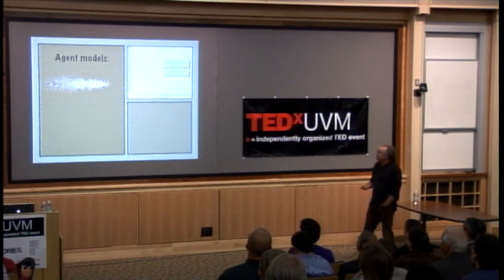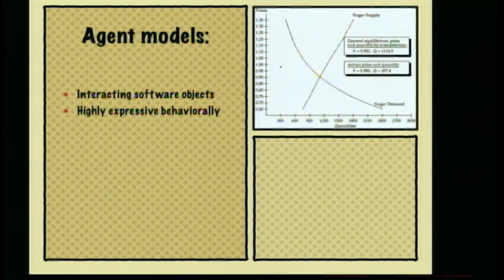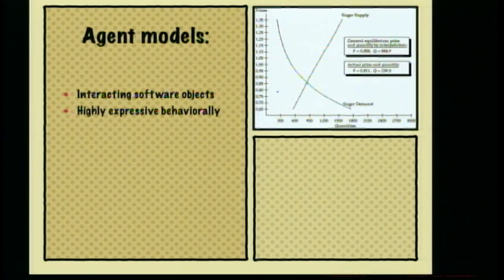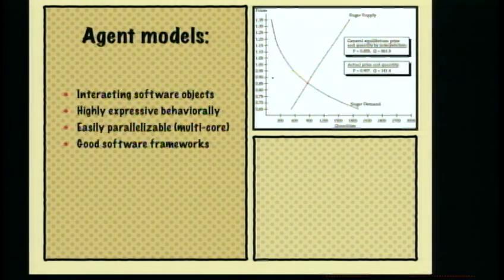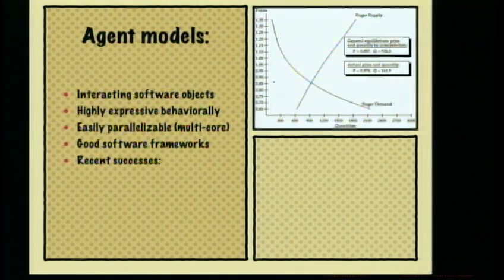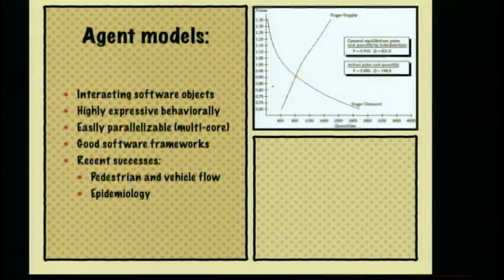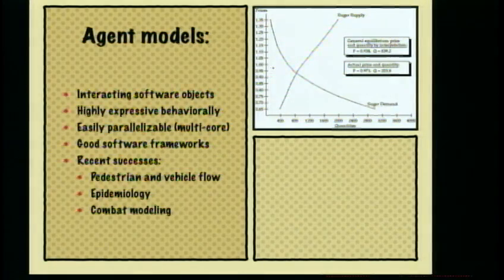One way to do that is with agent computing. For those who haven't seen it before: we have a bunch of software objects that interact in some non-trivial way. They're not just particles in a gas bouncing off one another. It's actually very easy to write down behaviorally and experimentally determined rules of behavior and put those into our models. These codes are easy to parallelize, which is important on modern architectures. There are good software frameworks for doing this today, and we've had several recent successes using agent-based models for policy purposes: pedestrian flow, epidemiology, and combat modeling.